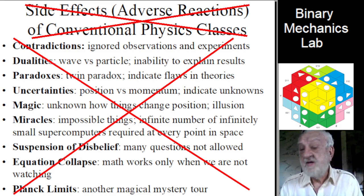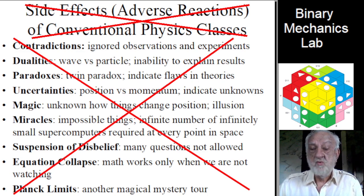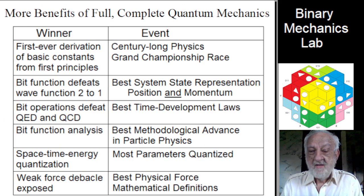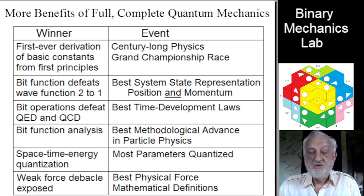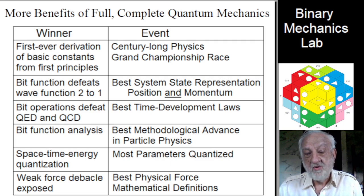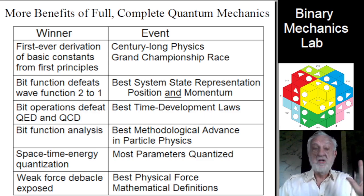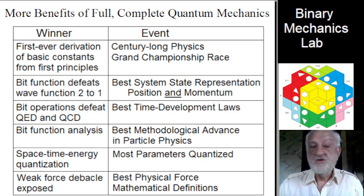Instead, we may cite many benefits of full, complete quantum mechanics. Binary mechanics has been the clear winner in the major events or competition in what we might call the physics Olympics. First, we have the century-long physics grand championship race, which we won with first-ever derivation of basic constants from first principles.